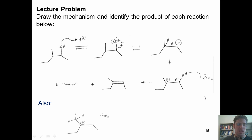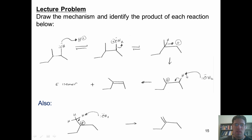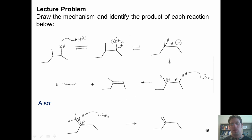Note that this is not the only product possible. If instead I take this same intermediate and the water grabs a proton off of the methyl group here and pumps the electrons down to form a double bond, I form a different product. Now, the water could also grab a hydrogen off of the adjacent carbon — but if you look at that product closely, you'll realize it is the exact same product, because this carbocation intermediate is symmetrical. Go ahead and draw it on paper and you'll see for yourself.